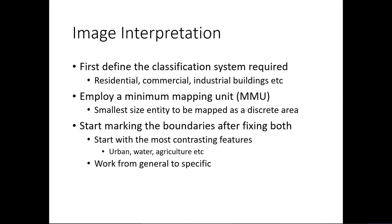After defining the classification system, you employ a minimum mapping unit (MMU) — the smallest size entity to be mapped as a discrete area. Then you start marking boundaries, beginning with the most contrasting features — urban areas, water bodies, and agriculture are easily identifiable and differentiable in an aerial photograph. You classify these first, then work down to smaller, more specific features, moving from general to specific.